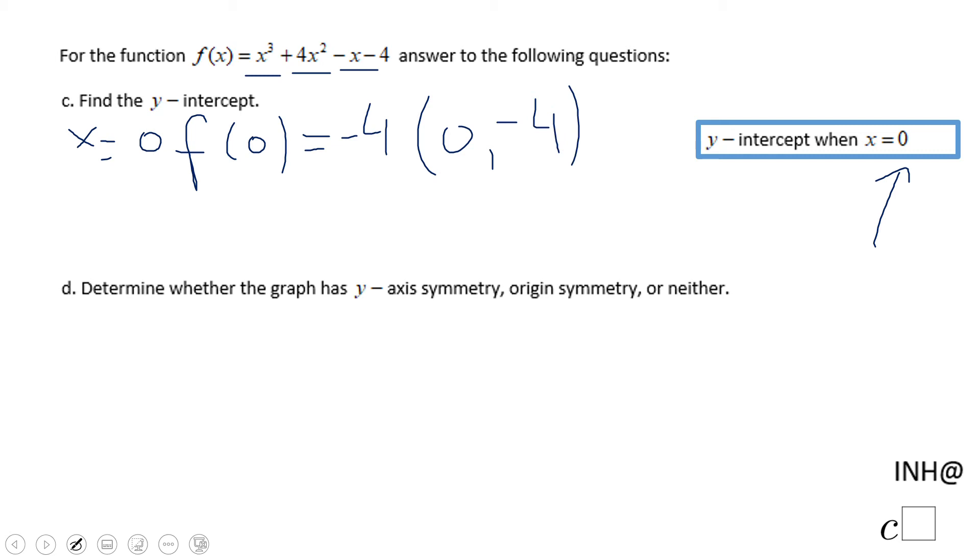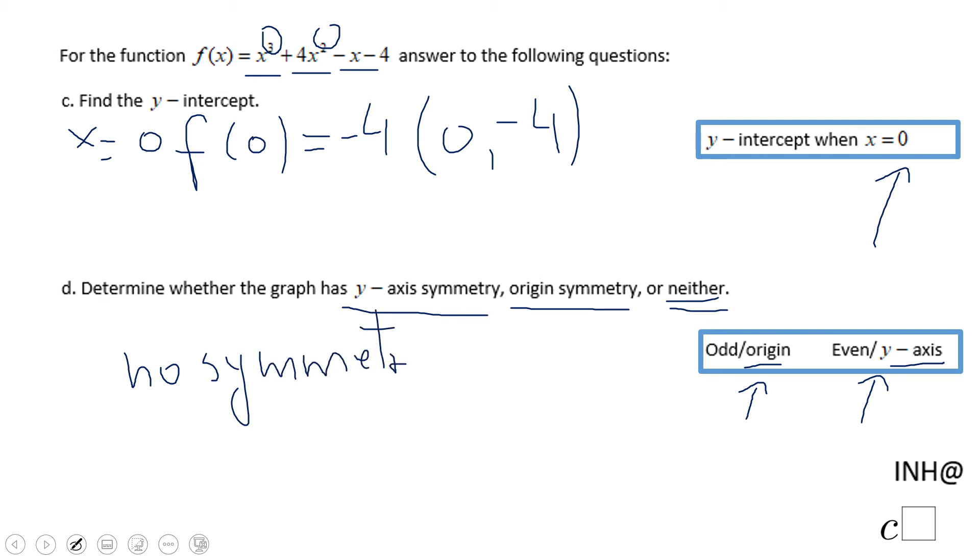Now we can go to part D when looking for symmetry. Do we have y-axis symmetry, origin symmetry, or neither? For that reason it's very important to look if the function is odd or even. If it's odd we have origin, if it's even we have y-axis. Look at here: this is odd, this is even. You add an even and an odd, you get what we call neither. So in fact we have no symmetry.